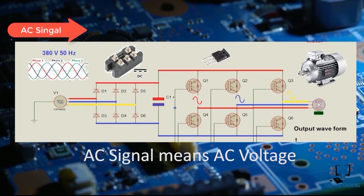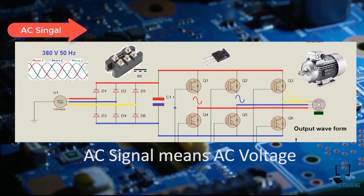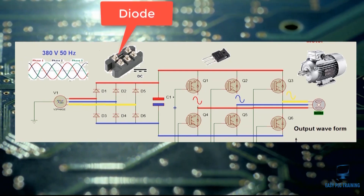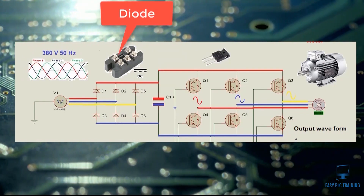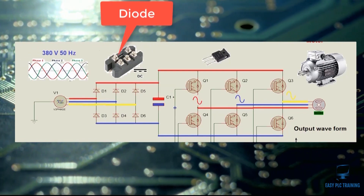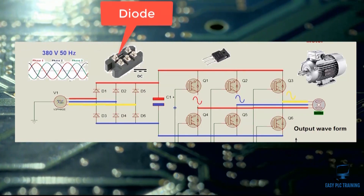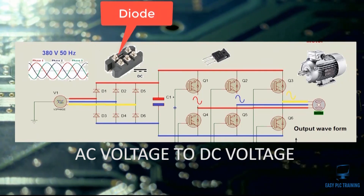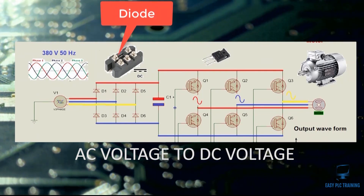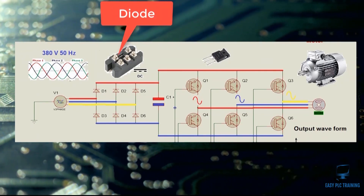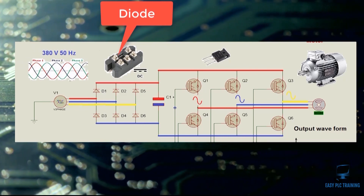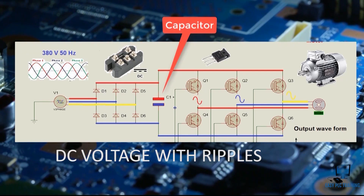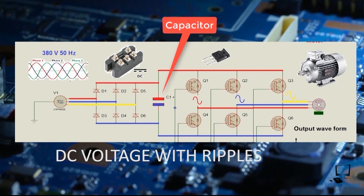First of all, when an AC signal is injected into the VFD, it has to pass through diodes. The purpose of the diodes is just to convert the incoming AC signal to DC. The DC signal coming from the output of the diodes is not very clean.